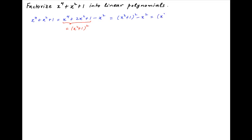This is equal to (x squared plus 1 plus x) multiplied by (x squared plus 1 minus x), which can be rewritten as (x squared plus x plus 1) times (x squared minus x plus 1).